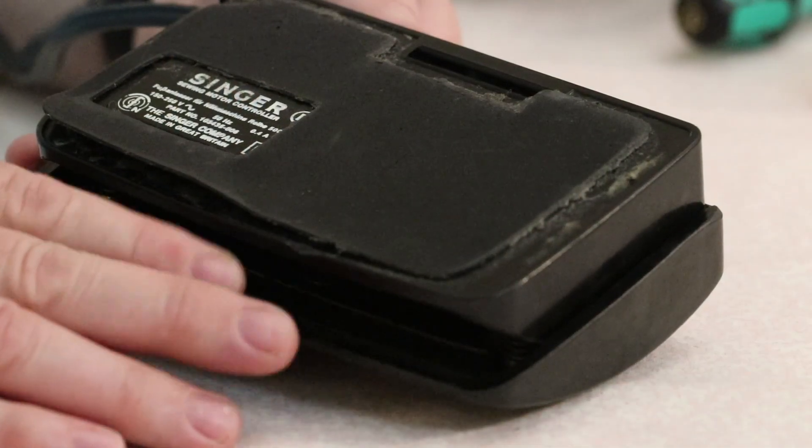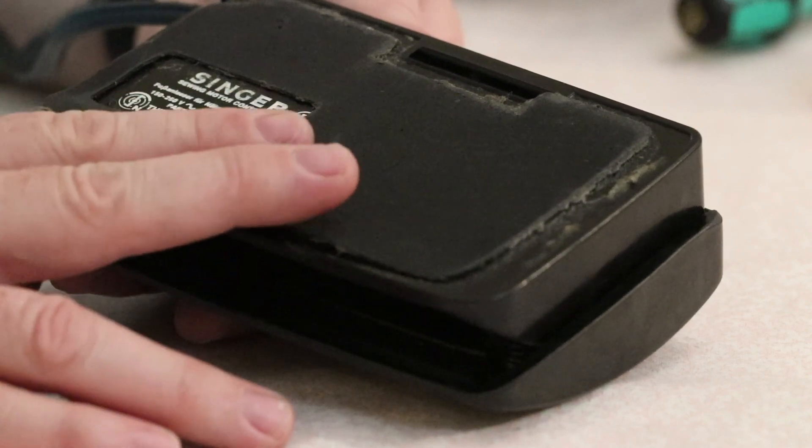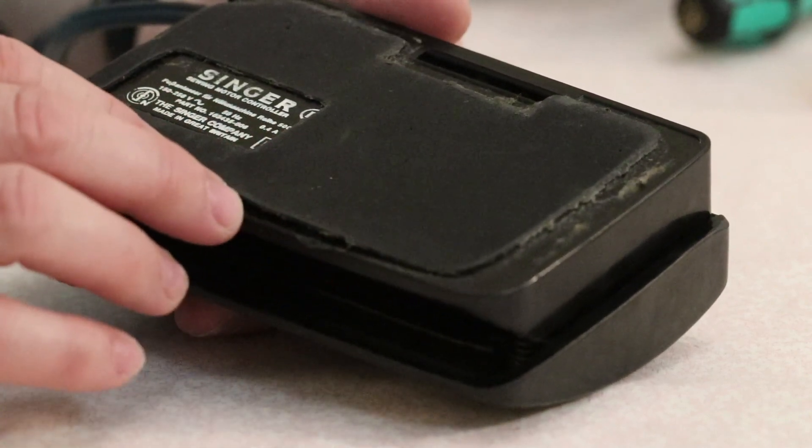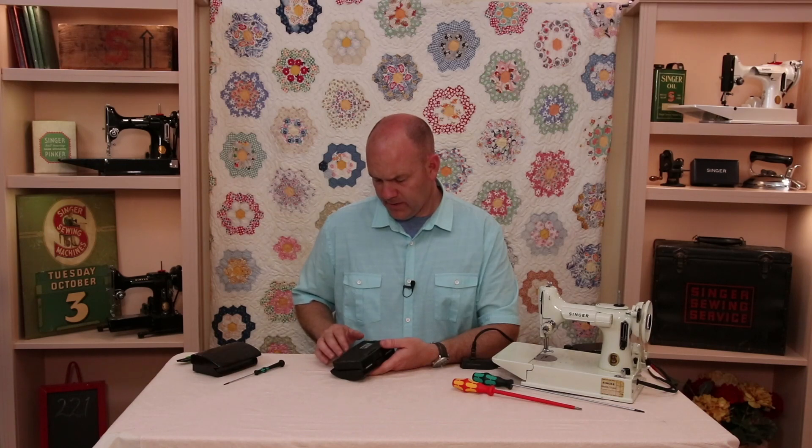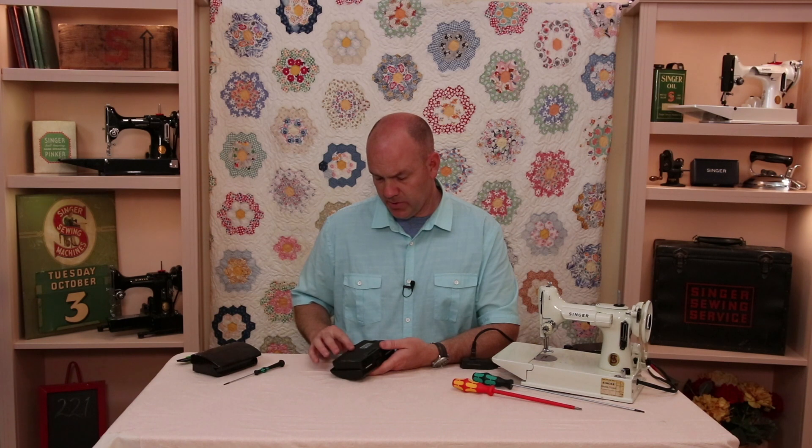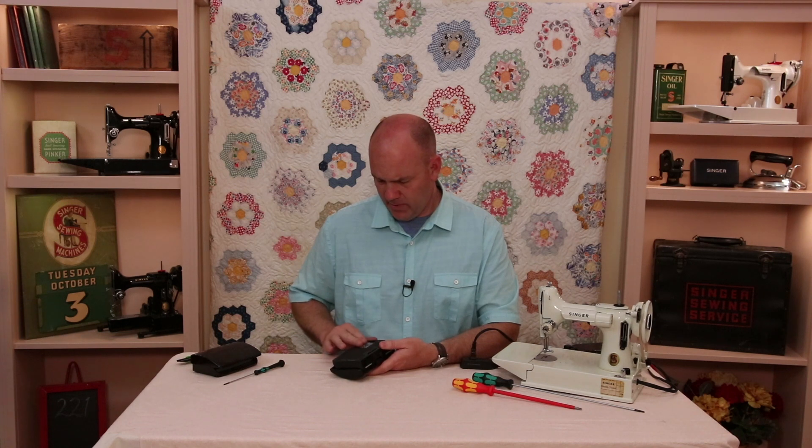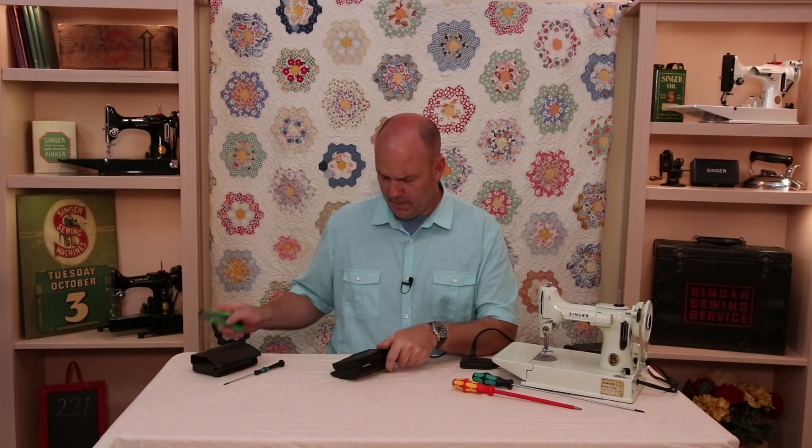This controller that we're going to be adjusting today is a pretty common style that has this rubbery mat on the bottom. And what we often see is people peel this back in order to get to the screw to open it up. And when you peel this back you can never get it to stay down again. So I'm going to show you the preferred method.